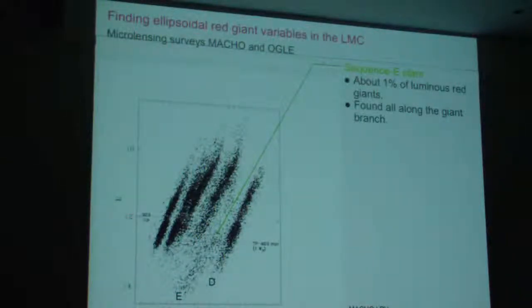So how do we find these things? It turns out that if you look at large systems like the OGLE or the SMC or the galactic bulge, as MACHO and OGLE have done, and you've got period luminosity laws for red giant stars, you find that there's a group of stars down here in a kind of a loose sequence called sequence E, that in fact are these ellipsoidal variables. They're about 1% of the luminous red giants.